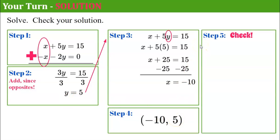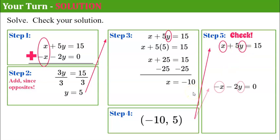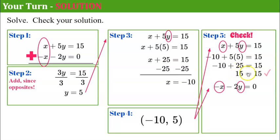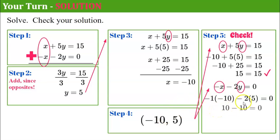Step 5: check. Bring over our two original equations and replace x with negative 10 and y with 5. Negative 10 plus 5 times 5 is negative 10 plus 25 equals positive 15 — it checks. For the second equation, negative x means negative 1 times x, which is negative 1 times negative 10, giving positive 10. Then 10 subtract 2 times 5, which is 10 subtract 10, equals 0 — it checks. Our solution is the ordered pair (negative 10, 5).